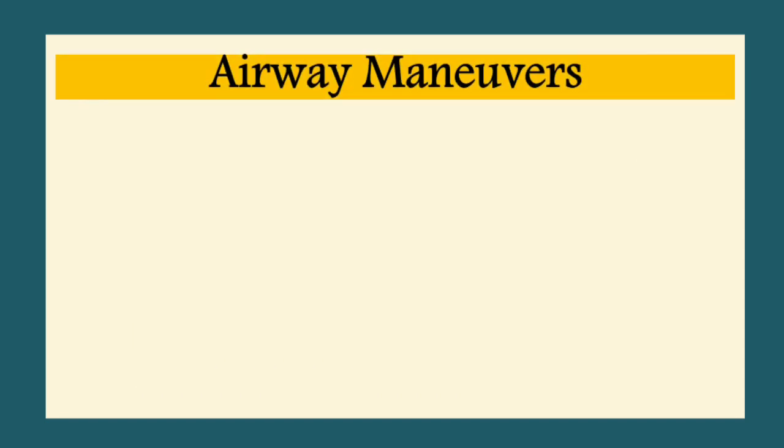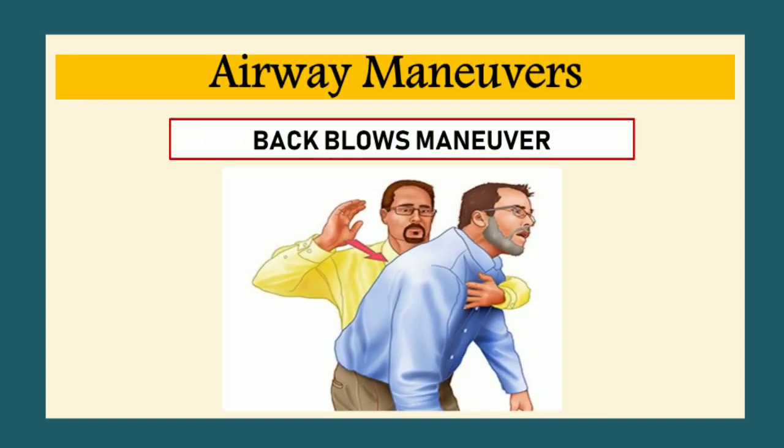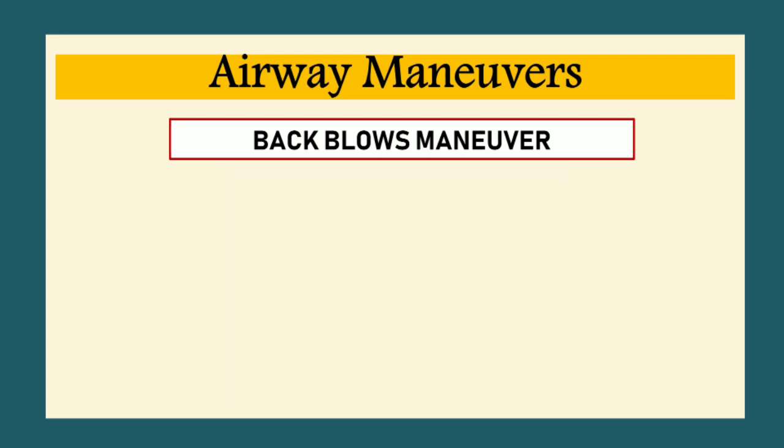The next airway manoeuvre is the back blow manoeuvre. Stand behind the client and slightly to one side. Support their chest with one hand. Give up to five sharp blows between their shoulder blades with the heel of your hand. Check if the blockage has cleared; if not, give up to five abdominal thrusts.